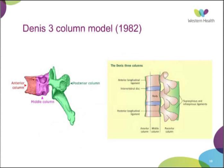Denis described his three-column model theory in the early 1980s, building upon previous authors. He describes three columns of the spine: the anterior column, made up of the anterior longitudinal ligament and the anterior one-third of the vertebral body; the middle column, comprising the posterior two-thirds of the vertebral body and the posterior longitudinal ligament; and the posterior column, which comprises the posterior ligamentous complex.